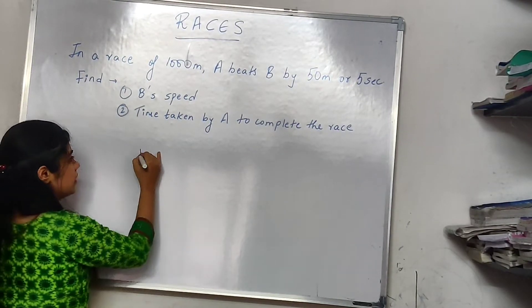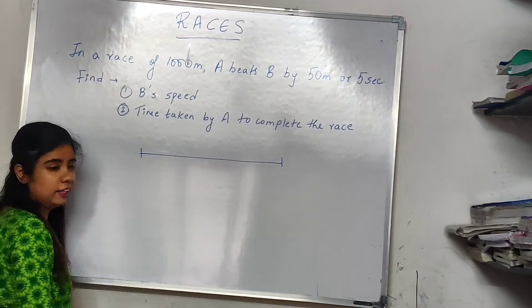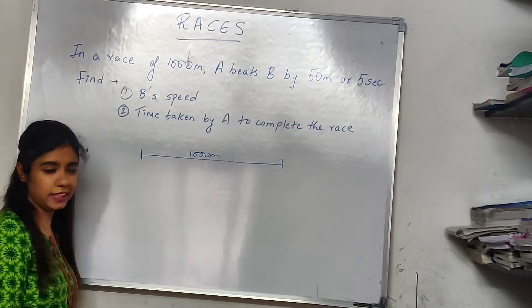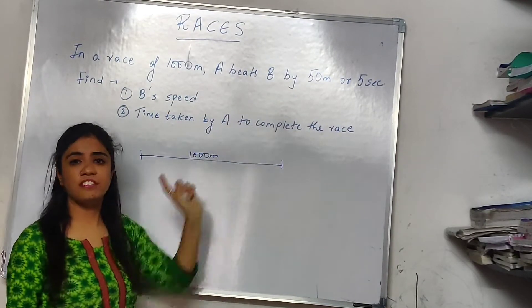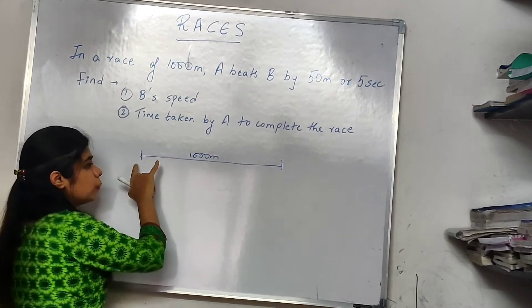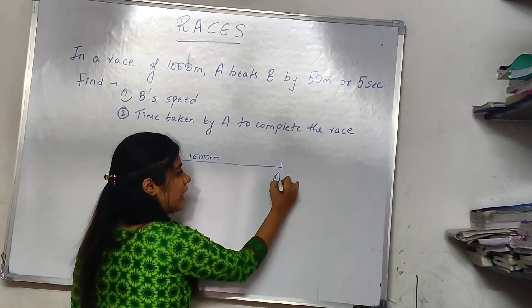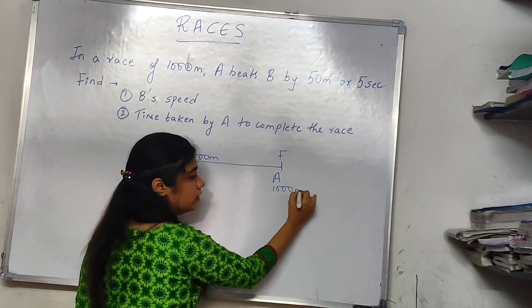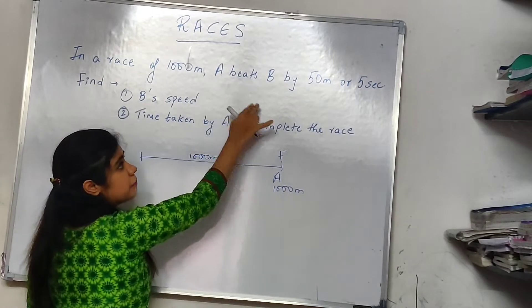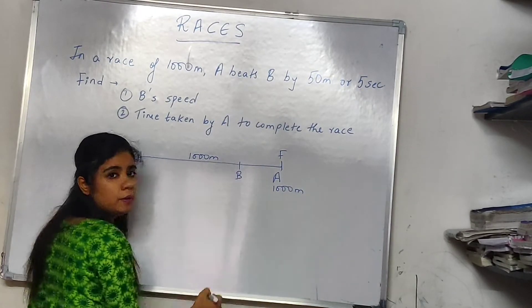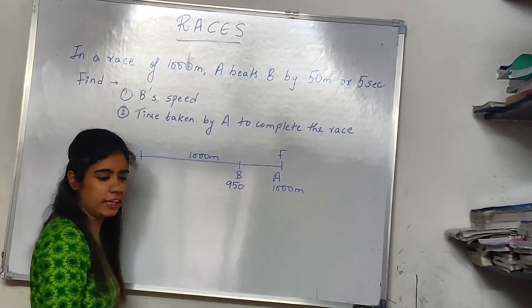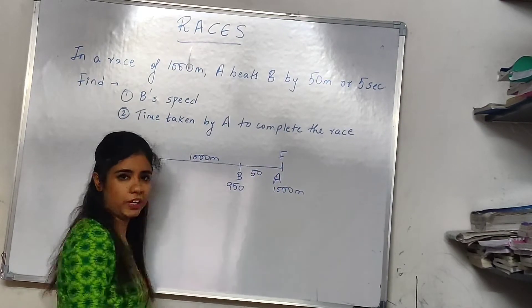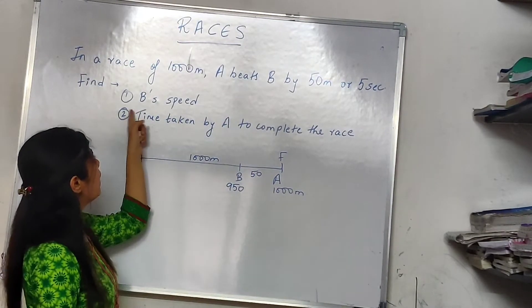Understand one thing. Let's say this is my linear track — the length of the track is 1000 meters. A beats B by 50 meters. What does this mean? When A has reached the final point at 1000 meters, B was at 950 meters, because A beats B by 50 meters. So the gap between them was 50. We are asked to find B's speed.